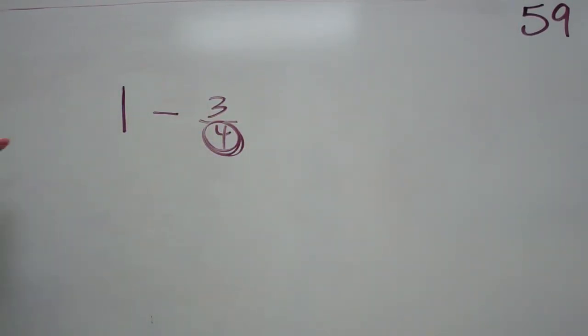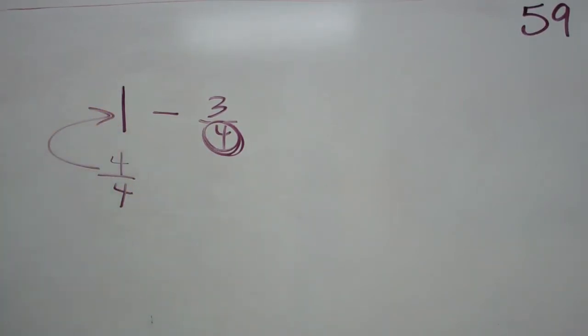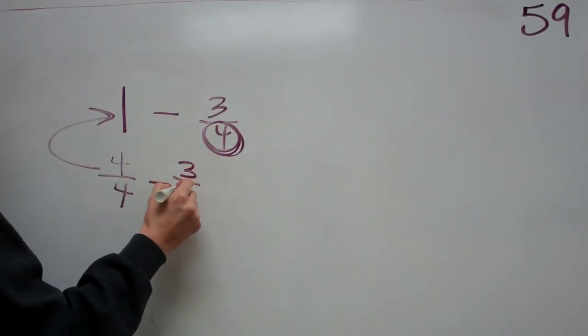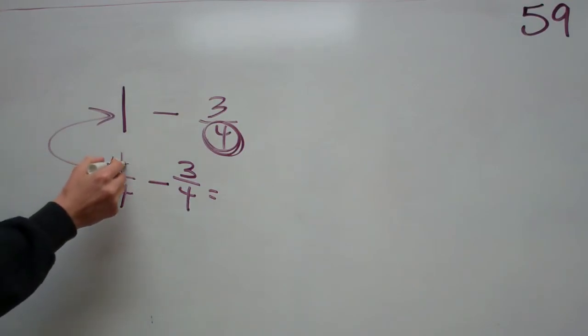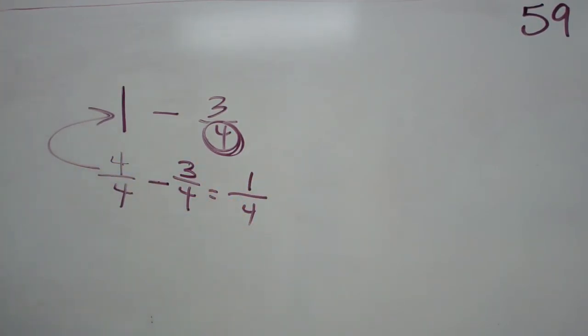So would it be okay for me to put four over four for this one? Yes. That's what I did. Okay. And then you're going to go minus three over four. And then four minus three would be one over four. Okay. Let me hear it now. Everybody feels like they got it? Yes. Not yet. Good stuff. That's lesson 59.